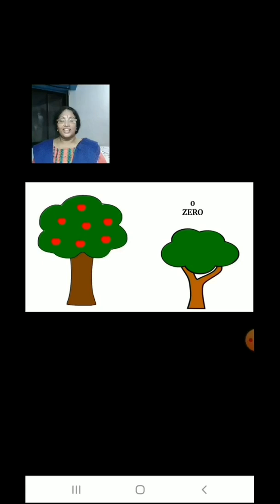There are 7 apples hanging from the tree. A wind came and all the apples fell down. Now how many apples are there on the tree? There are 0 apples.